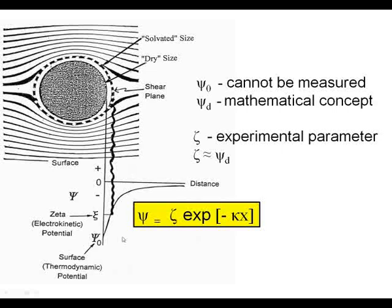We cannot measure the fundamental surface potential ψ₀ directly. However, what can be measured is an electrokinetic potential that we term the zeta potential, defined as the potential at the shear plane. The location of the shear plane is never precisely known — estimates range from about 1 nm to 10 nm thickness — which can result in some uncertainty in the precise magnitude of a measured zeta potential. The zeta potential is frequently taken to be identical with the Stern potential. Zeta potential is therefore a very useful experimental parameter to monitor the electrokinetic behavior of suspensions and changes in such behavior.